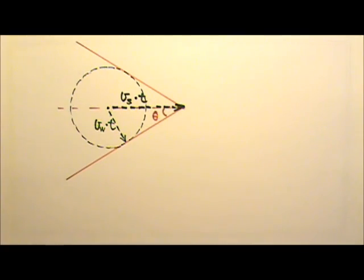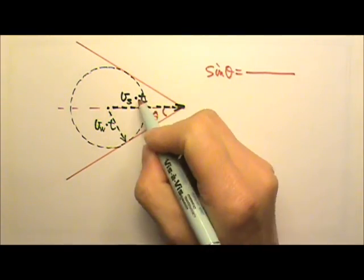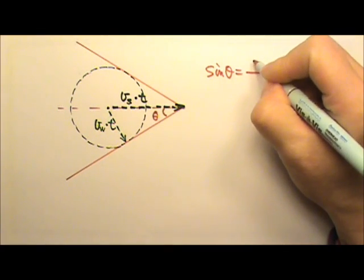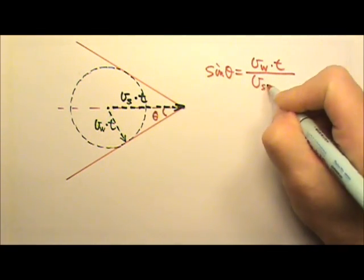Therefore, we have sine theta equals to the opposite side over the hypotenuse. So it's the speed of the wave times time divided by the speed of the source times time.